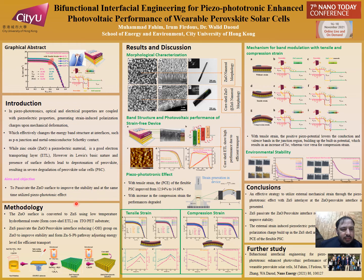To address this, the ZnO surface is converted to zinc sulfide using a low-temperature hydrothermal method. The zinc sulfide reduces the hydroxyl groups on the surface of ZnO, improving stability, and at the same time creates a pathway — through interaction with lead iodide — that improves the energy level alignment for efficient charge transport.